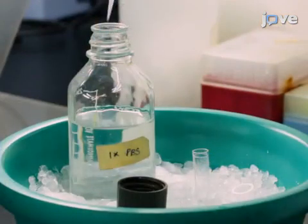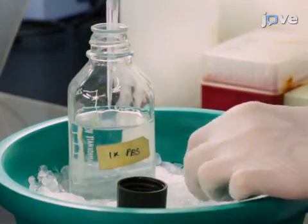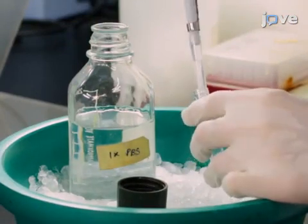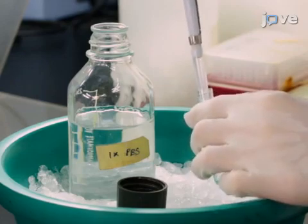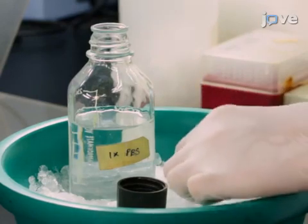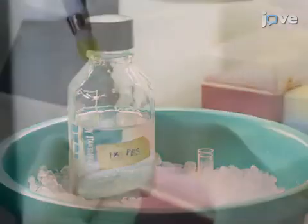After two washes by centrifugation, re-suspend the pellet at a 5 to 10 times 10 to the 6 cells per milliliter concentration in 200 microliters of cold PBS buffer and add 5 microliters of biotinylated anti-human antibodies.